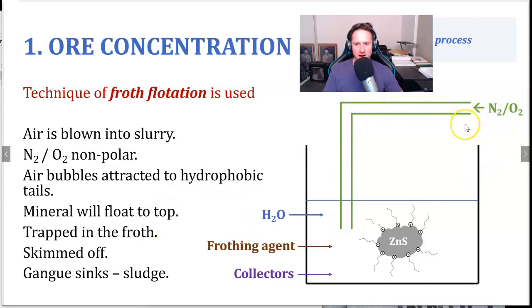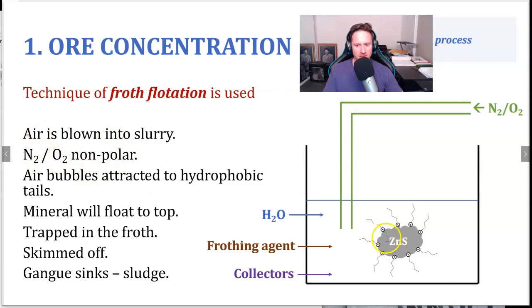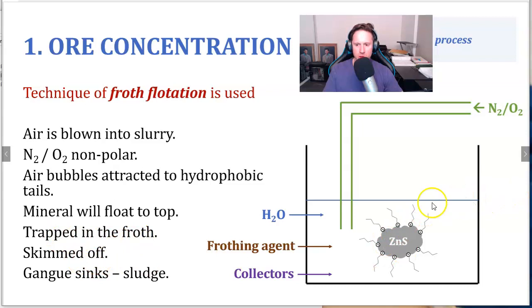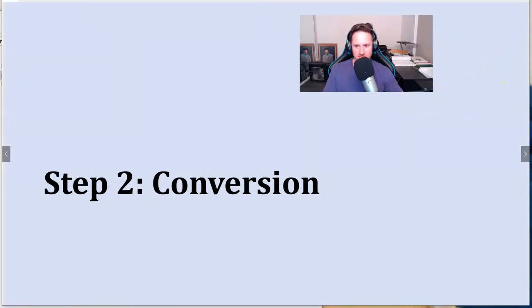Air is blown into the tank — just like blowing bubbles into milk — using nitrogen and oxygen, which are inert and not going to react with anything; they're just providing bubbles. The air bubbles are non-polar and are attracted to the hydrophobic tails of the xanthate molecules. The bubbles rise and attach to those non-polar tails, carrying the zinc sulfide mineral to the top where it's trapped in the froth and skimmed off. The gangue, which doesn't have xanthates attached, sinks to the bottom as sludge and can be collected separately.